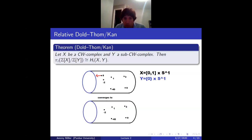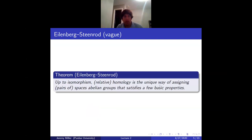The way I like to think about the free abelian group on a space modulo the free abelian group on a subspace: you think of it as points moving around in the space, but when they hit the subspace, they vanish. A vague statement of the Eilenberg-Steenrod theorem is that up to isomorphism, relative homology is the unique way of assigning to pairs of spaces abelian groups satisfying a few basic properties.